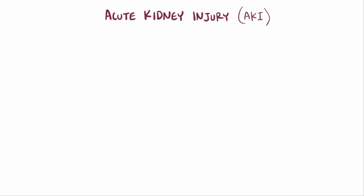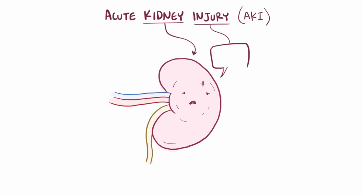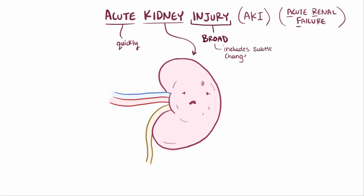Acute Kidney Injury, or AKI, is when the kidney is not functioning at 100%, and that decrease in function usually develops relatively quickly, typically over the course of a few days. AKI used to be known as Acute Renal Failure, or ARF, but AKI is a broader term that also includes subtle decreases in kidney function.